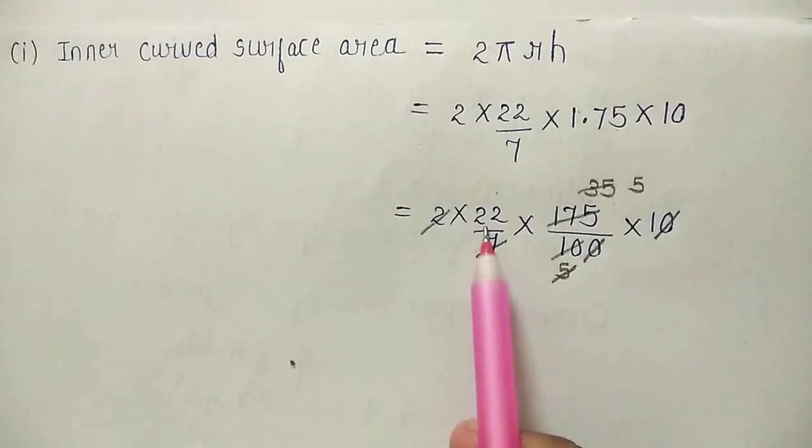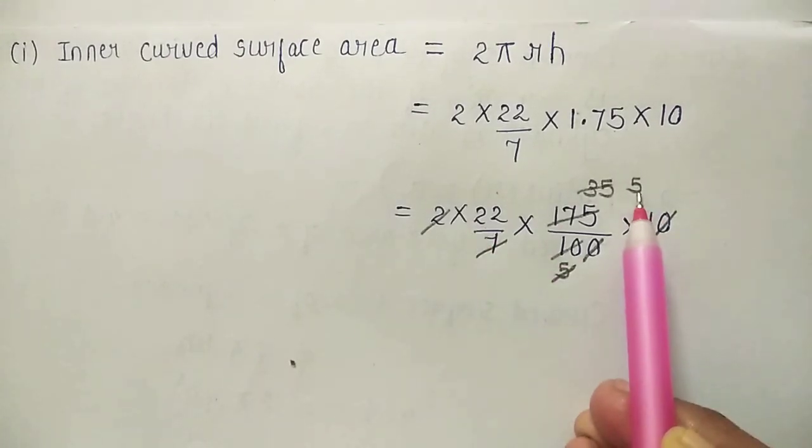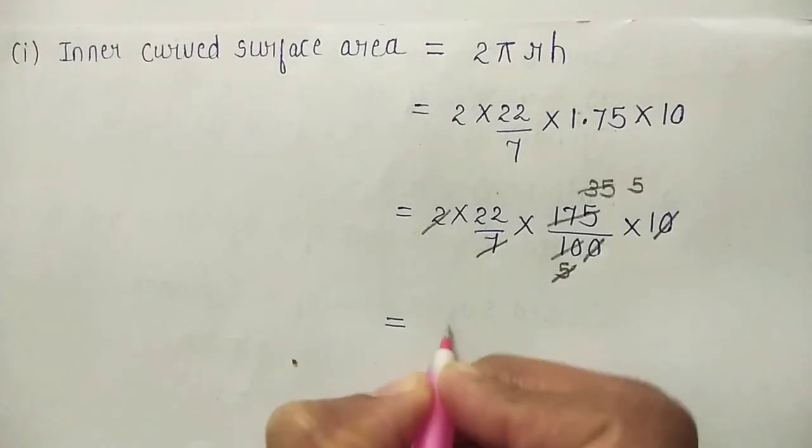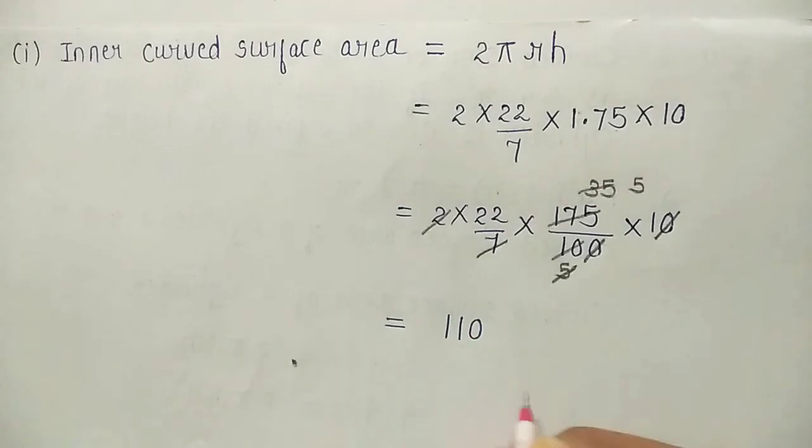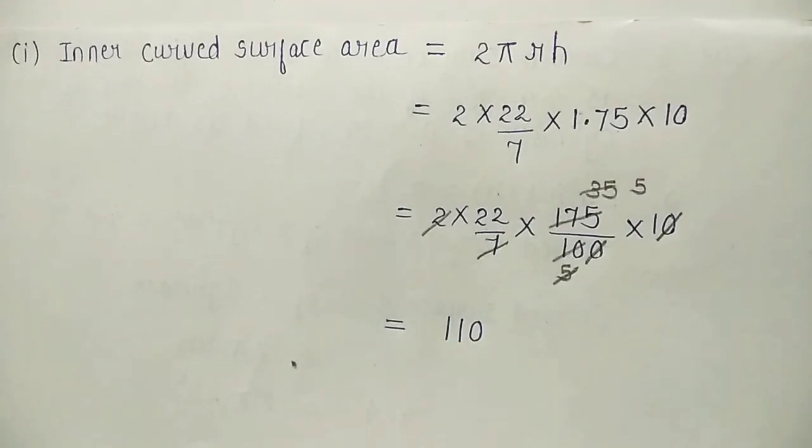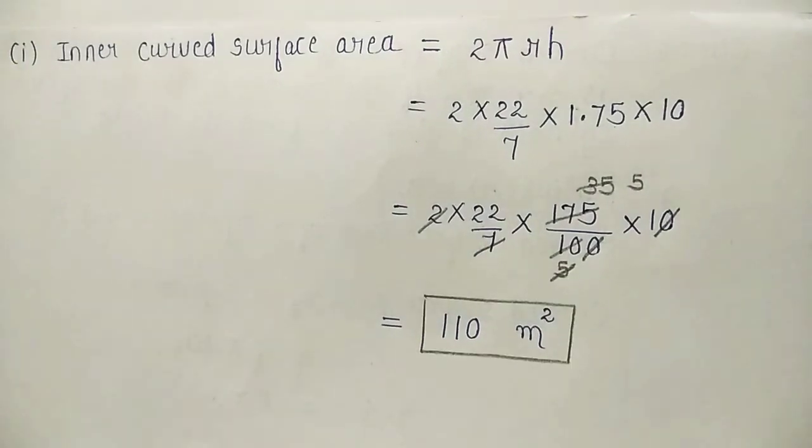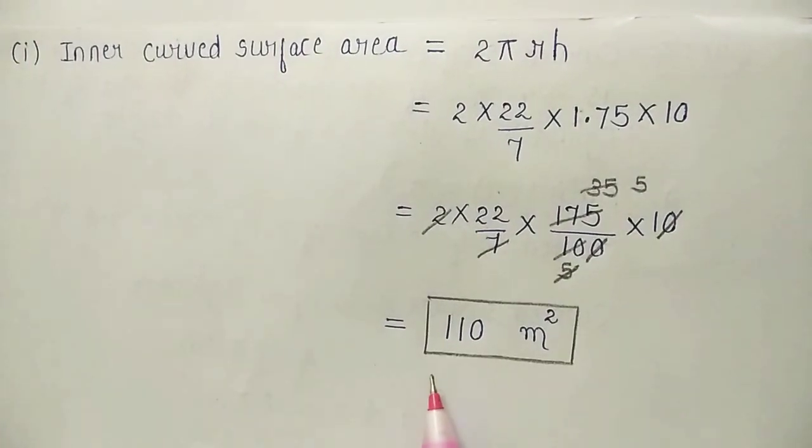We are left with 22 multiplied with 5. So, 22 multiplied with 5 is equal to 110. It is area, unit will be meter square. So, this is the inner curved surface area of the well. Now,